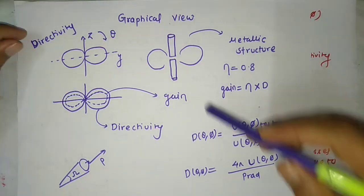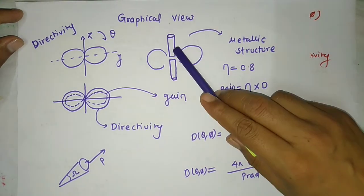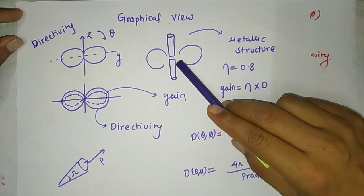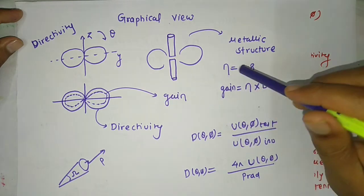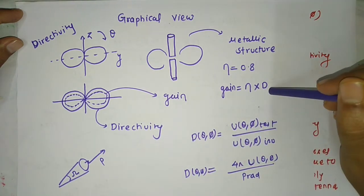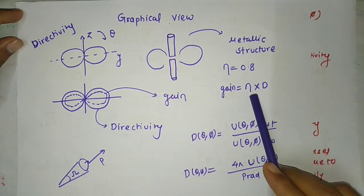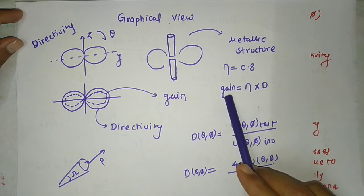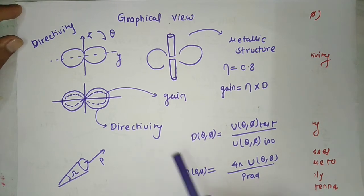Consider a dipole antenna, which is a metallic structure. When excited, there will be some loss. Suppose this is its radiation pattern and directivity curve, and the antenna efficiency is 0.8. Then gain = efficiency × directivity. The blue curve is the directivity curve; multiplying by 0.8 gives the gain curve. So for any practical antenna, gain will be less than directivity.